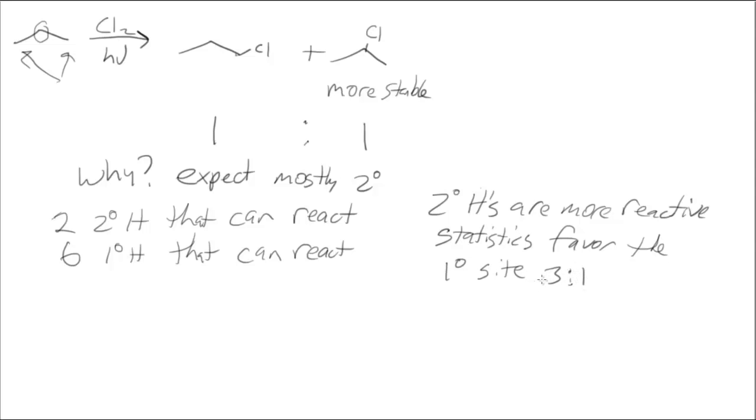If there is no preference for either one, then the primary should be favored three to one. So what that tells us is that there actually is a preference for secondary, even with chlorine, which is very reactive.